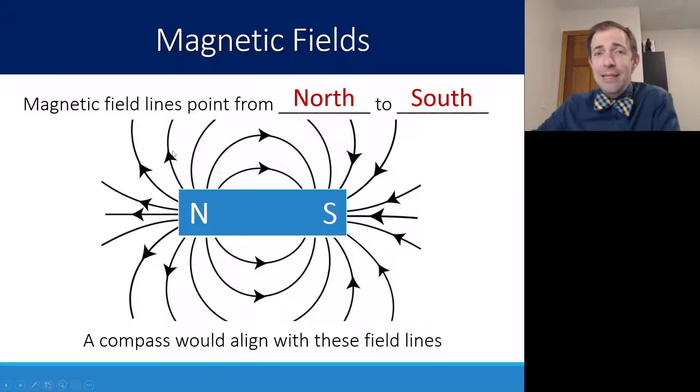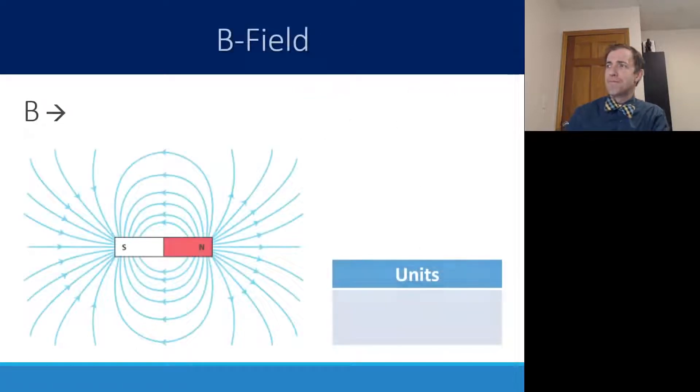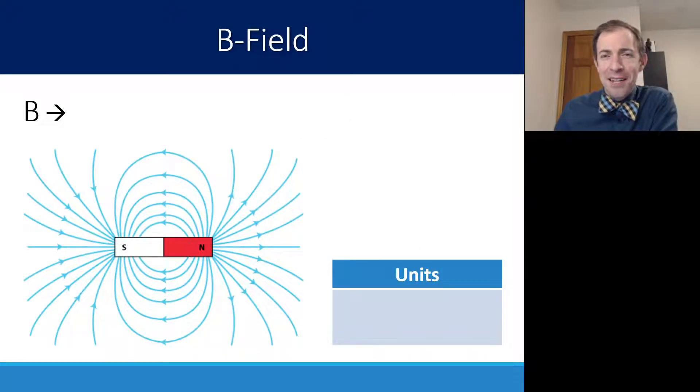A key point here is what this is telling you is essentially the direction that a compass would point if it was placed in that spot. So say you were to put a compass up here on this field line. It would align itself to go directly with that field line pointing from the north to the south.